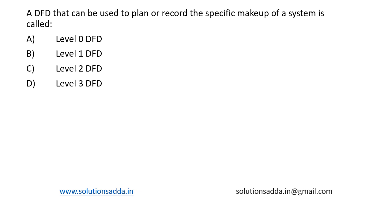This is a question from software engineering. A DFD that can be used to plan or record the specific makeup of a system is called: Level 0, Level 1, Level 2, or Level 3? So what is DFD? DFD stands for Data Flow Diagram.